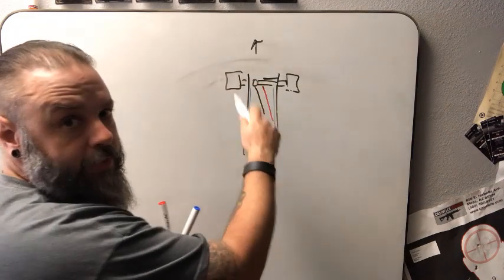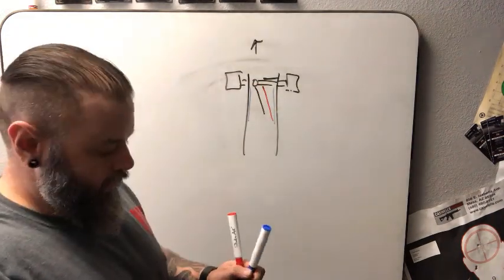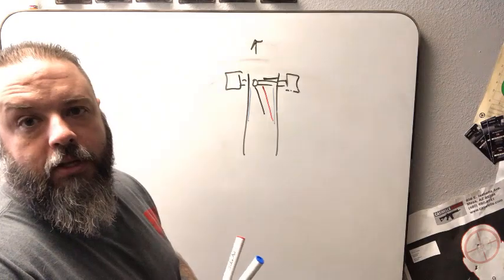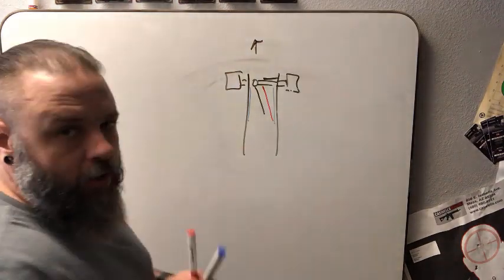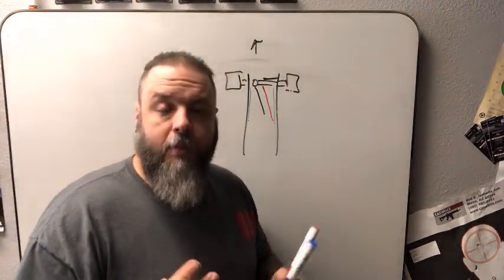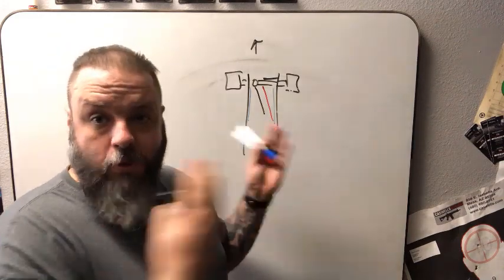That axle is gonna go up and down just fine and not hit anything. So that's why you might want to look at a three link if you're dealing with offset pumpkin or some off-road applications. I hope this works for everybody. If you have other questions or this didn't clear it up, just let me know and I'll try to figure out what exactly you're looking for.